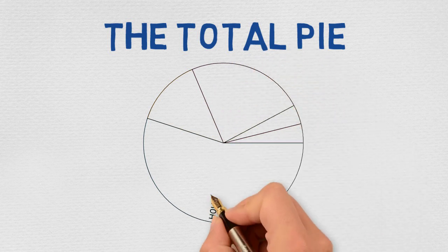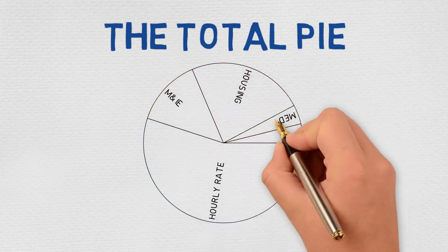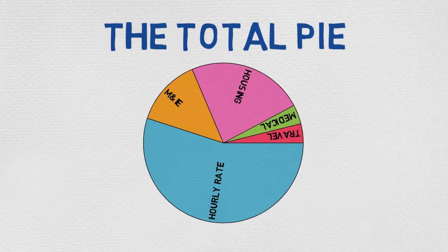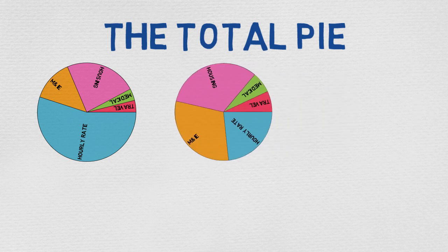You should avoid focusing on any one slice of the pie and instead determine the total value of the pie, because determining the total value of the pie is the only way to accurately compare competing compensation packages, which will be quoted to you in different ways.